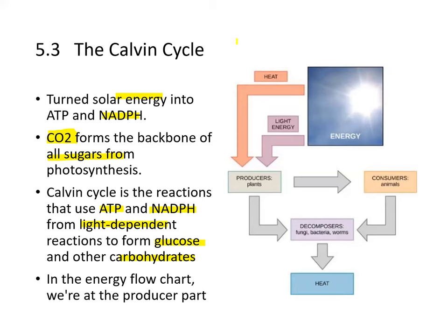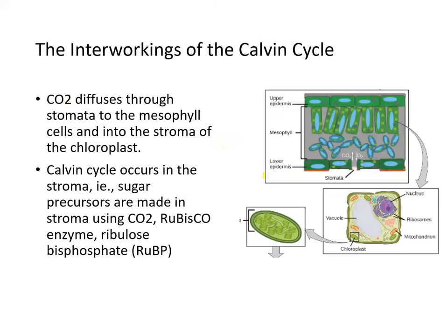In the energy chart we saw last week, we are at the producer part right now. CO2 diffuses through the stomata into the mesophyll of the leaf, and then into the stroma of the chloroplast. The stroma is the space inside the chloroplast. The Calvin cycle occurs in the stroma, and sugar precursors are made there using CO2, the rubisco enzyme, and ribulose bisphosphate.